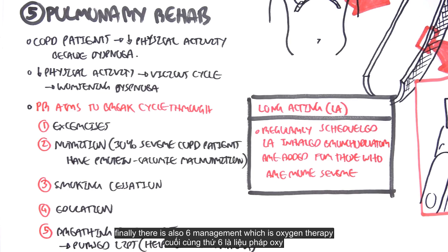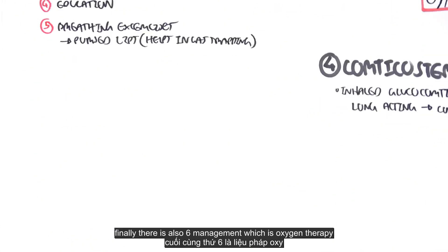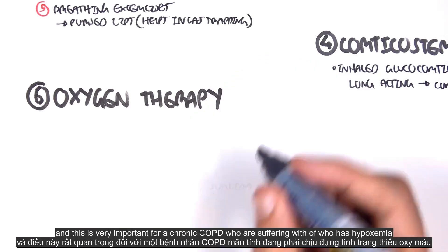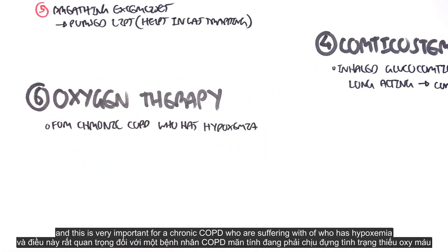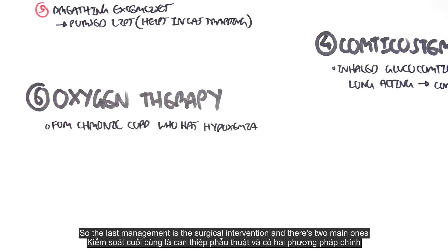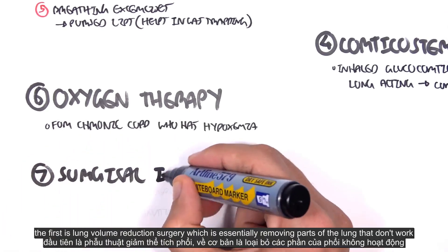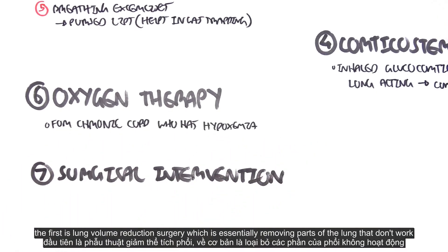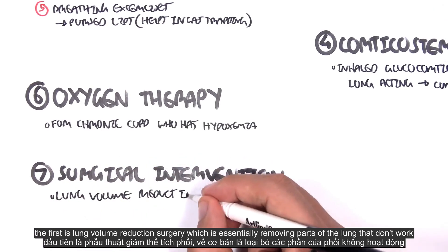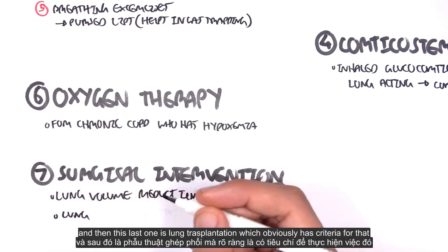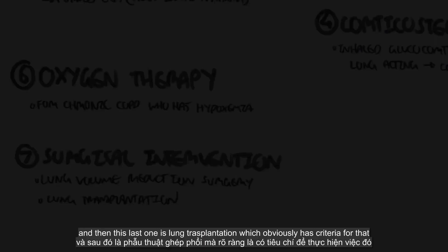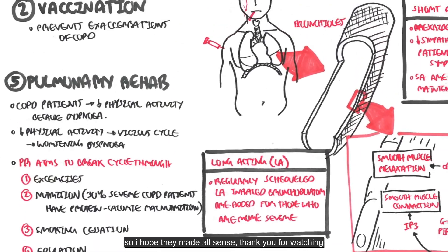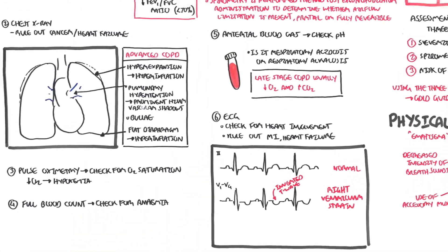Finally, there is also oxygen therapy, which is very important for chronic COPD patients suffering from hypoxemia. The last management option is surgical intervention. There are two main ones: first is lung volume reduction surgery, which involves removing parts of the lung that don't work; and second is lung transplantation, which obviously has specific criteria.